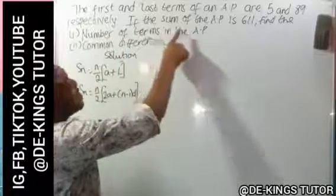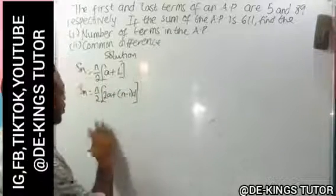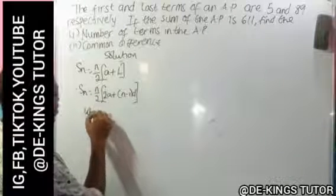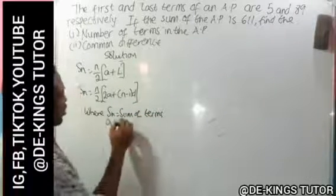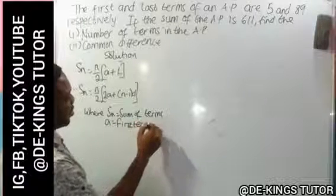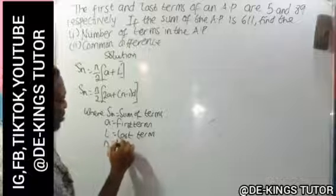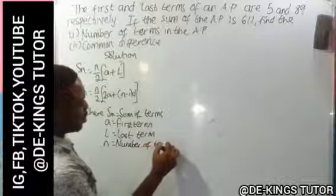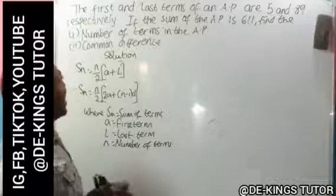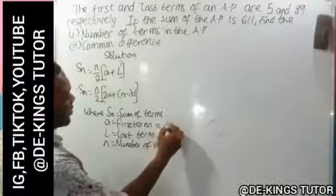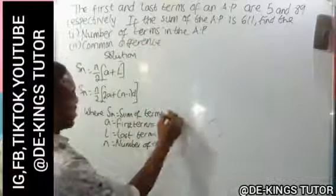They say the first and the last term of an AP are 5 and 89 respectively, so we are going to use the first formula. Here, S_n stands for sum of terms, 'a' is always our first term, 'l' is our last term, and 'n' is the number of terms we have to find. They say the first and the last terms are 5 and 89, and the sum of the AP is 611, so S_n = 611.